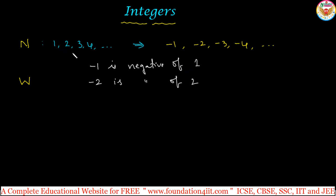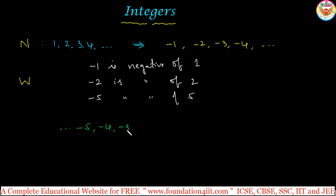From natural numbers, by keeping one negative sign before, it becomes the negative number of that particular natural number. So minus 5 is the negative of plus 5, just 5, and so on. When you combine natural numbers and negatives of natural numbers, including 0, you get: ...minus 5, minus 4, minus 3, minus 2, minus 1, 0, 1, 2, 3, 4, 5, and so on.